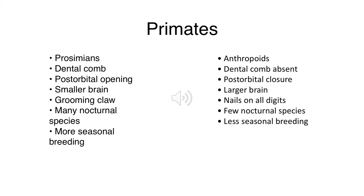Before jumping into individual prosimians, let's look at differences between prosimians and anthropoids. Prosimians - our lemurs, lorises, and tarsiers - often have a dental comb, part of their dentition used for grooming, which is absent in our anthropoid monkeys. Prosimians have a post-orbital eye opening (behind the eye orbit), whereas in Haplorhines the entire eye orbit is enclosed. Prosimians also tend to have smaller brains relative to body size - we call this the encephalization quotient.